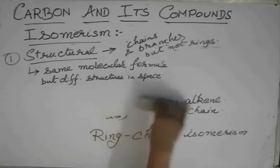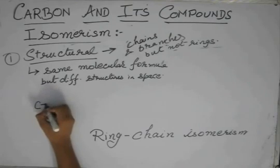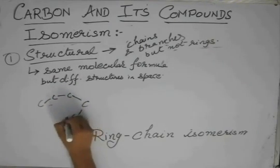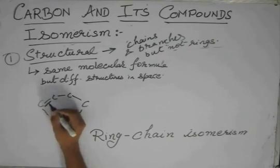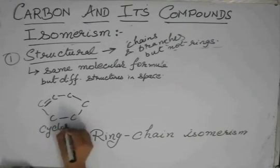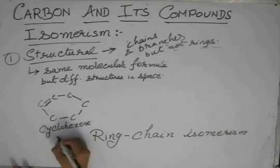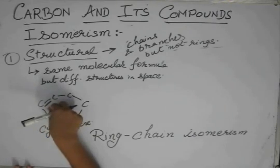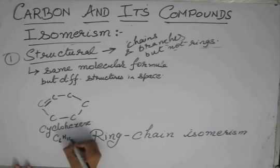This ring-chain isomerism can be of another type. Suppose you have cyclohexane and we add a double bond to one of the bonds. So this becomes cyclohexene. Now you see cyclohexane had a formula C6H12, but here since we have introduced a double bond, we must have needed to remove two hydrogens from here. So the formula changes to C6H10.